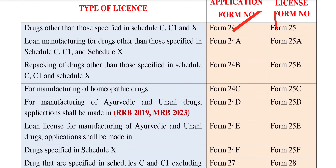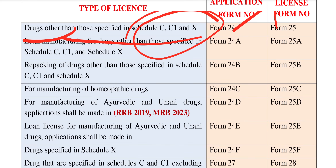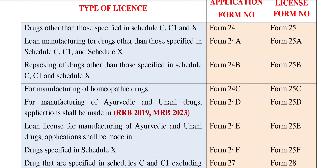We can find the manufacturing form number. Manufacturing is Form 24. That is common drug — drugs other than those specified in Schedule C, C1, and X. These are common drugs — not an addition. So only manufacturing is Form 24 for common drugs. We will find the license farm number. So Form 24 is the application farm number and Form 25 is the license farm number for manufacturing.